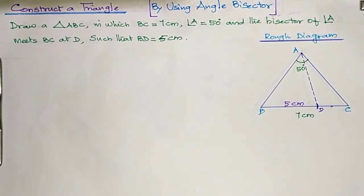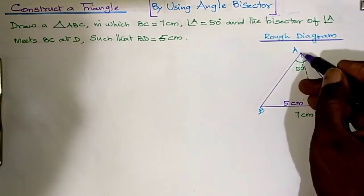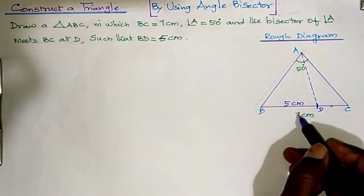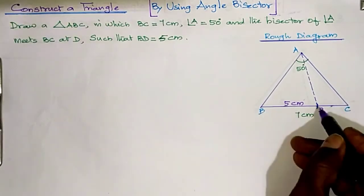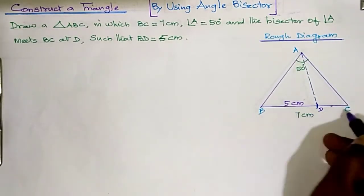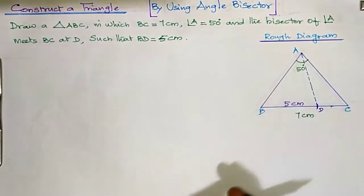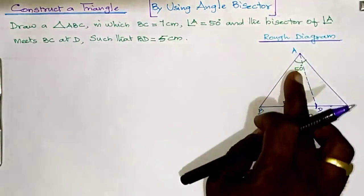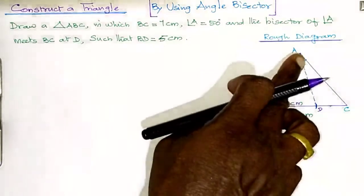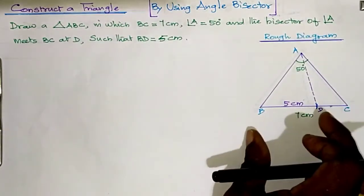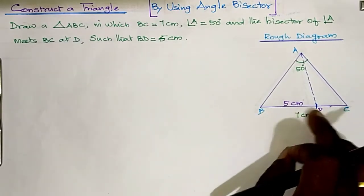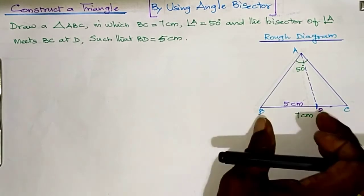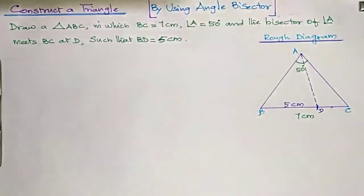This is the angle bisector of angle A which meets BC at 5 cm. AD meets BC, so ABC is a triangle with base BC equal to 7 cm and opposite vertical angle A equal to 50 degrees. From angle A, the angle bisector AD meets the base BC at point D where BD equals 5 cm.